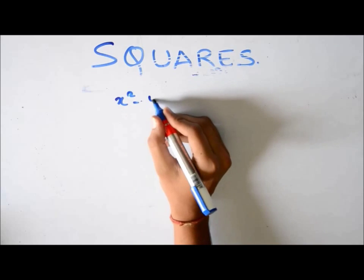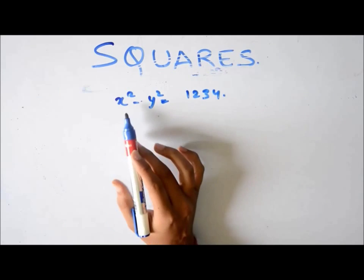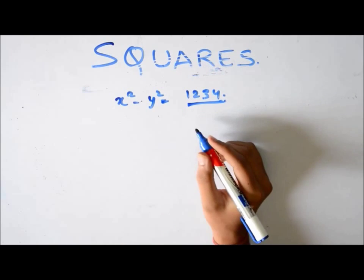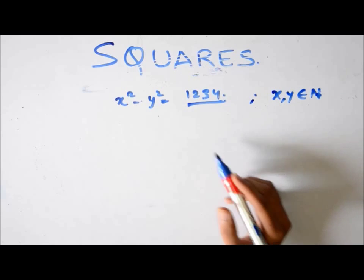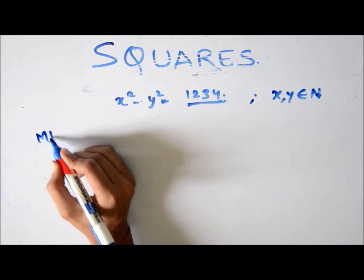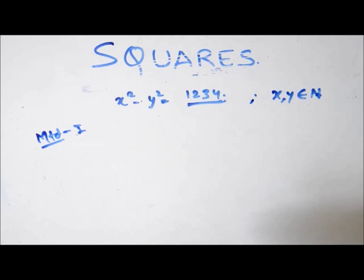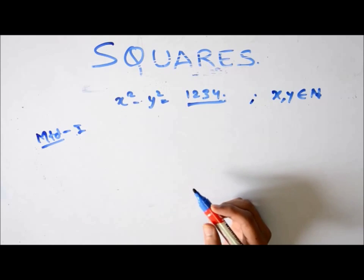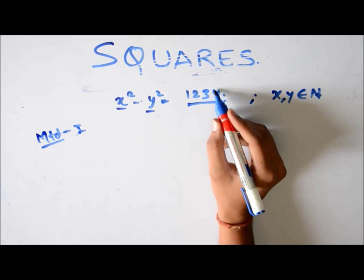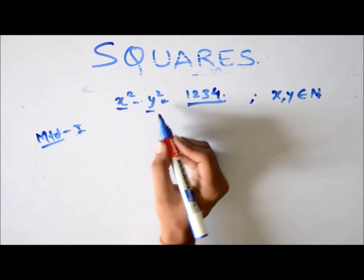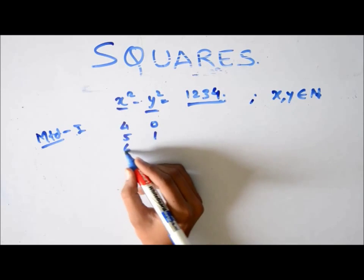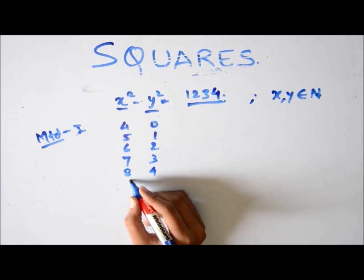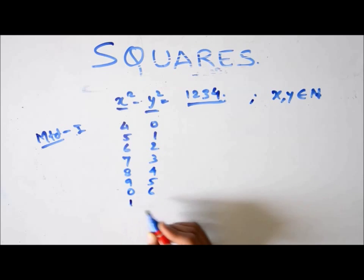Suppose the question is x square minus y square equals 1234. Now you can either factorize this into x plus y into x minus y and then it's given that x, y belong to natural numbers. And how many pairs of x and y are possible? So either you can go about factorizing this or let's consider two methods. Method one is the method using the second last digit of squares which we discussed just now. Since these two are perfect squares and we need the last digit to be 4, what can be the last two digits of these? It can be 4 and 0, can be 5 and 1, 6 and 2, 7 and 3, 8 and 4, 9 and 5, 0 and 6, 1 and 7, 2 and 8, 3 and 9. These are all the possibilities.